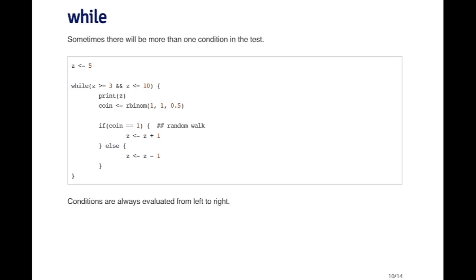The condition for the while loop is basically while z is greater than or equal to 3 and it's less than or equal to 10. So while it's between the values of 3 and 10, then what I'm going to do is print the value of z. I'm going to flip a coin, a fair coin.